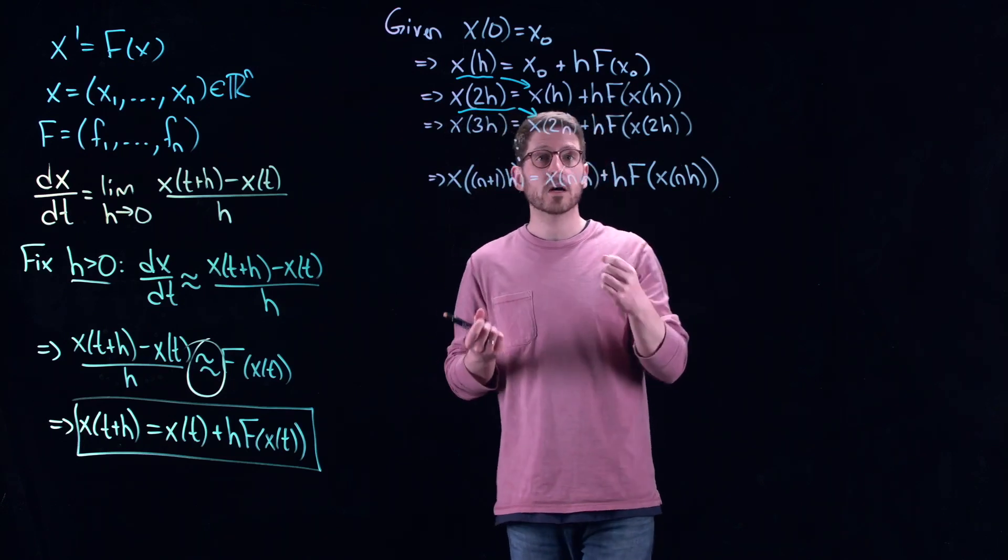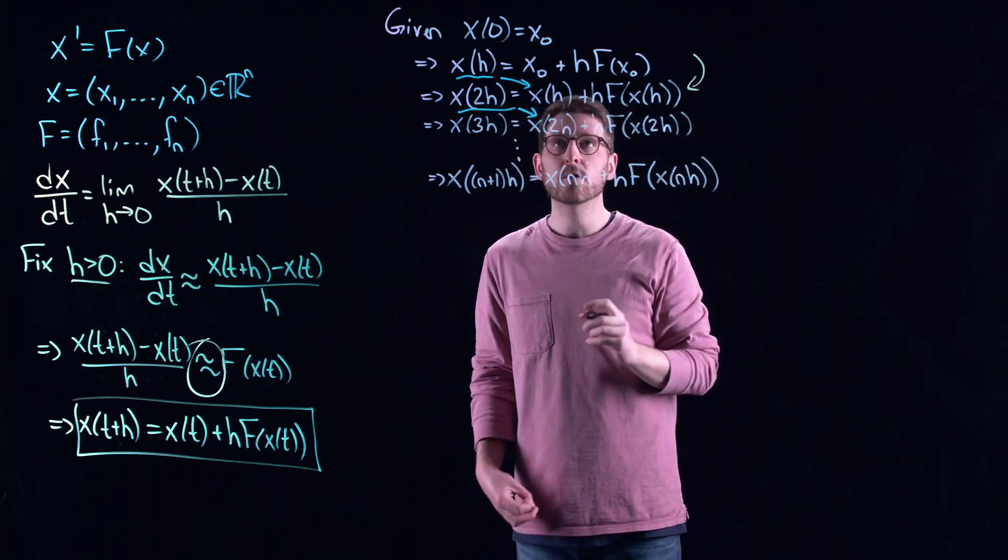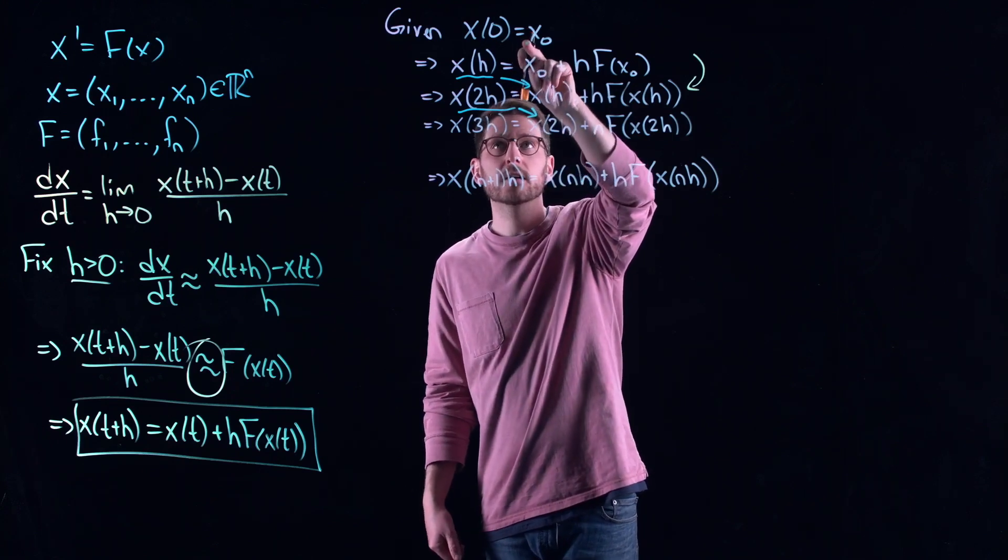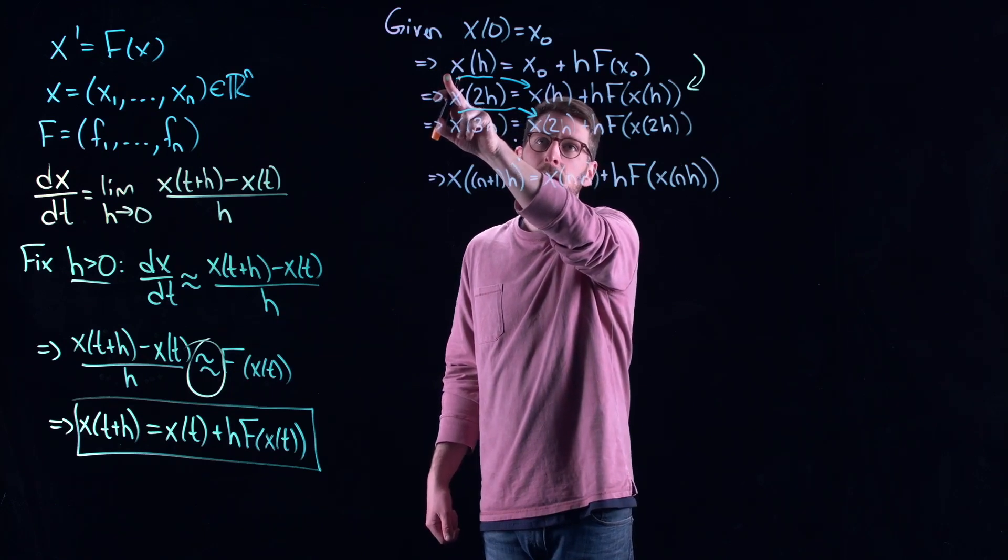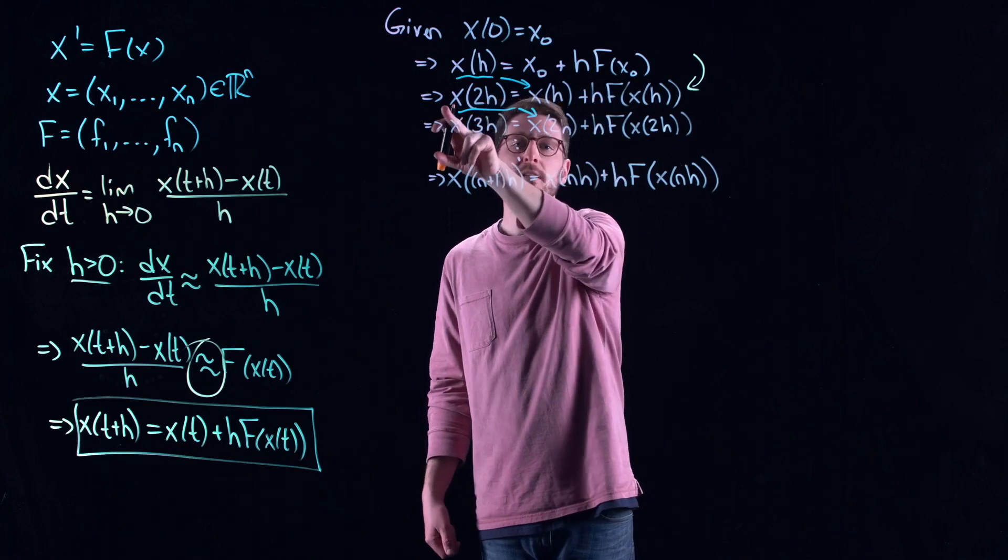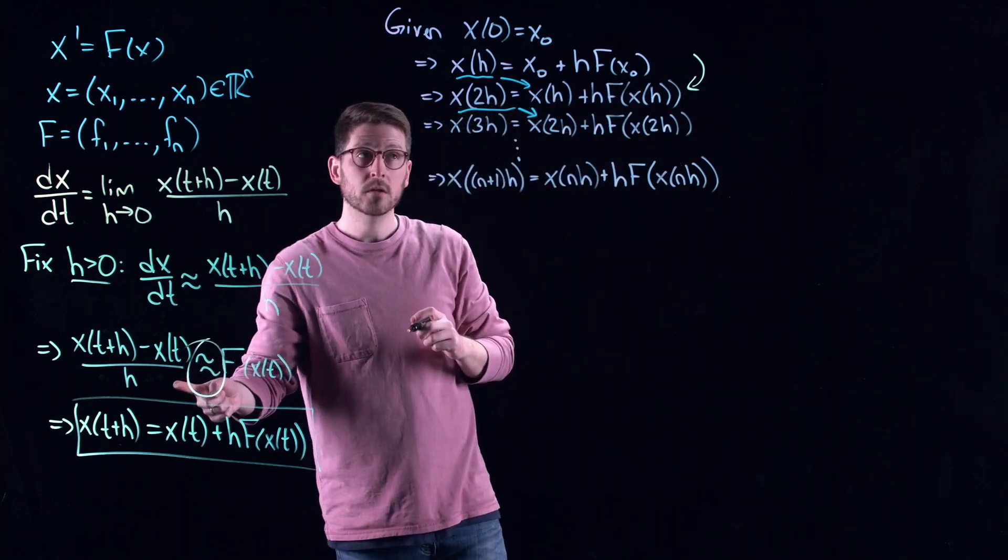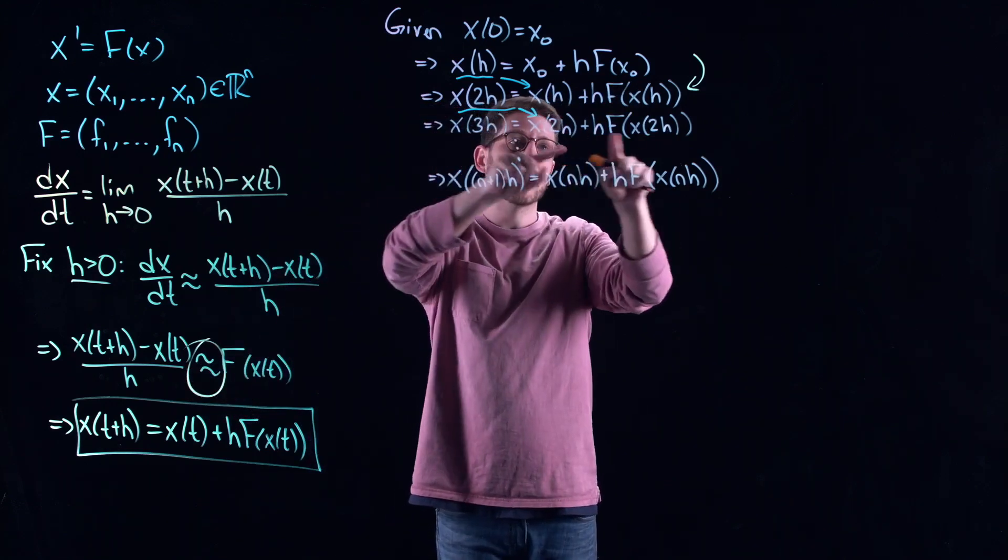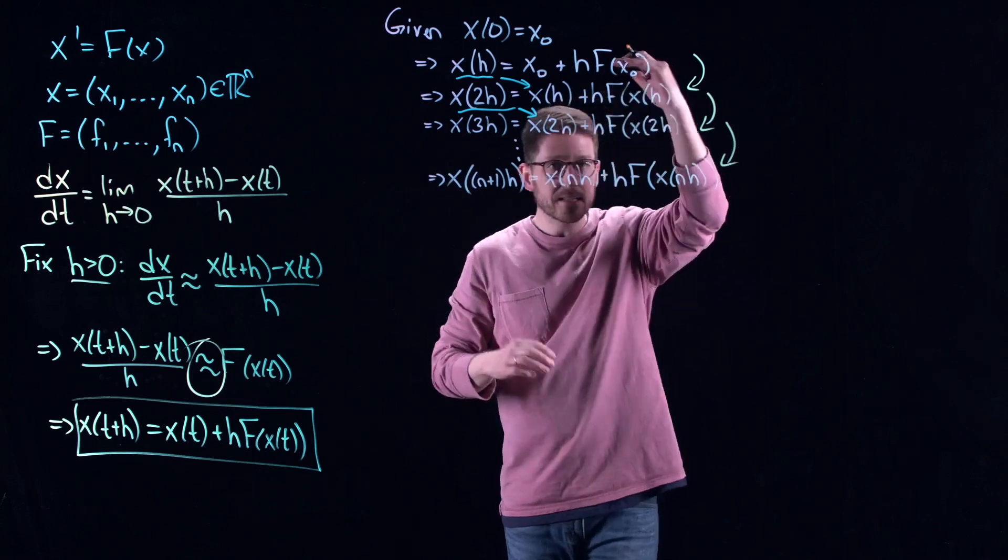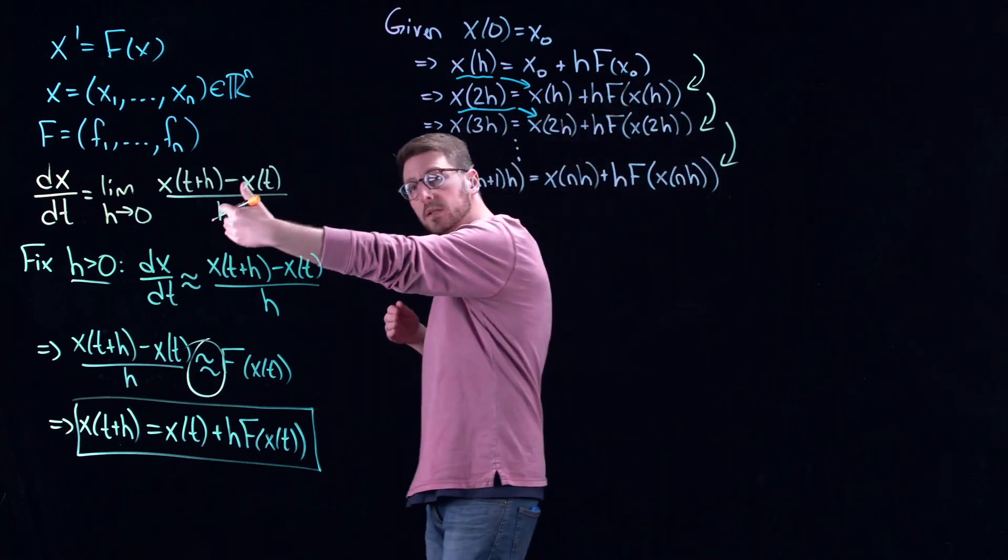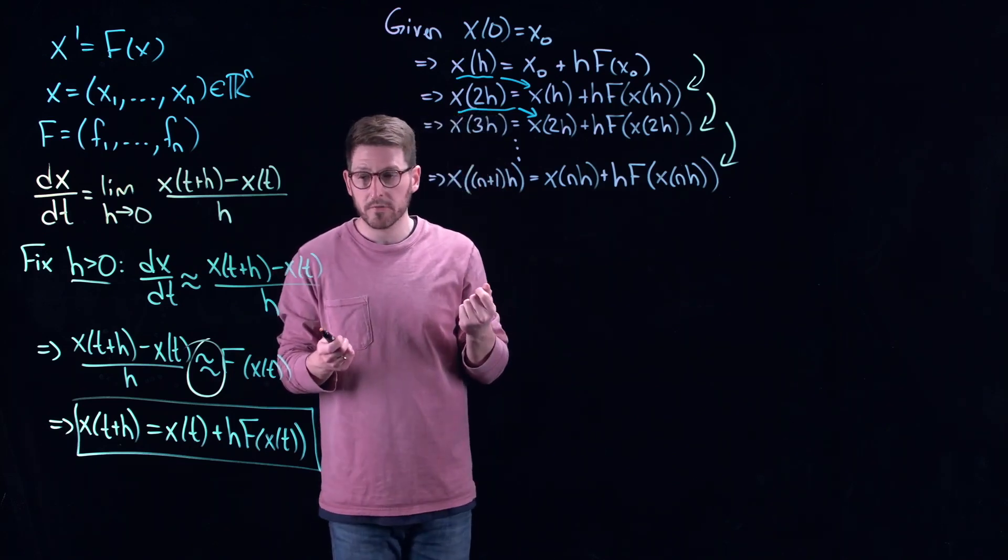That gives me a way of basically creating a looping procedure. I know where I start, I put it in, and then I put that in, and I keep going. This is a for-looping procedure that can be implemented very quickly and efficiently on a computer. But there's one thing that I really want you to keep in mind. The key here is approximately equal. This is not the exact derivative. The exact derivative requires a limit. That means that this is going to be off by just a little bit.